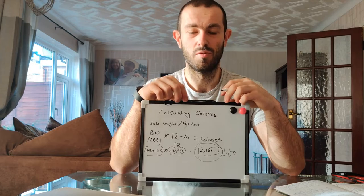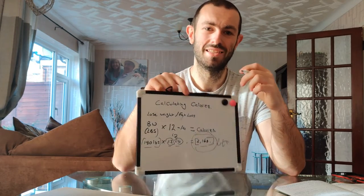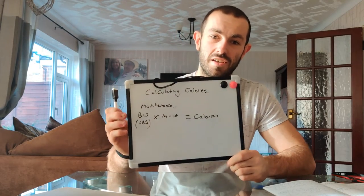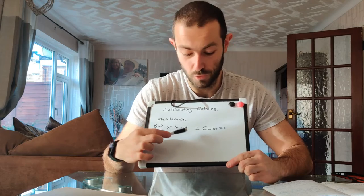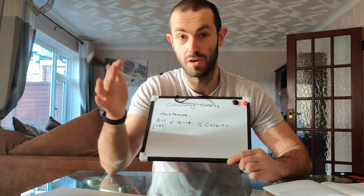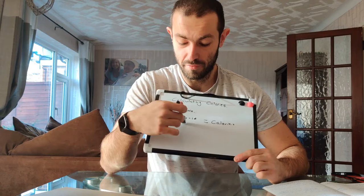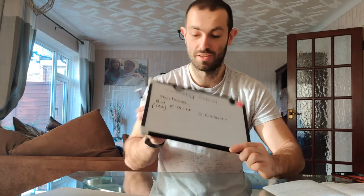Next we're going to jump into maintaining weight and how to work out your calories for maintenance. For maintenance it's fairly similar — just body weight again, but this time times 14 to 16. So obviously the 12 to 14 range is for cutting, and you go up a little bit for maintaining, giving you the 14 to 16 range, which will give you your calories.